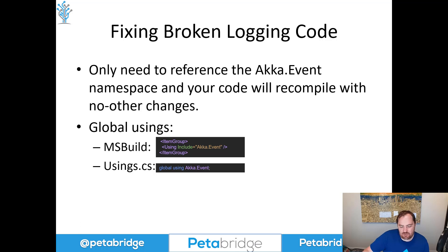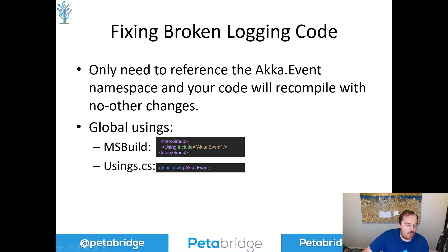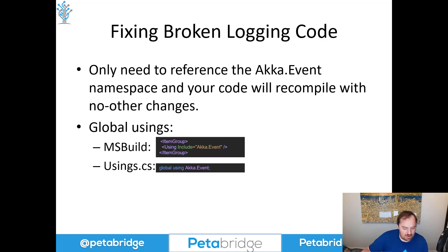I've upgraded Phobos and petabridge.command and a couple of our other libraries. It's really easy to fix this after you install Aka.NET 1.5. If you're running C# 10 or 11, you can use global usings in MSBuild or in a usings.cs file. Or if you're using Visual Studio 2019 or later, JetBrains Rider, or any version of ReSharper, you can just add the missing namespace and that'll fix the problem, giving you the performance benefits without changing any of your signatures.